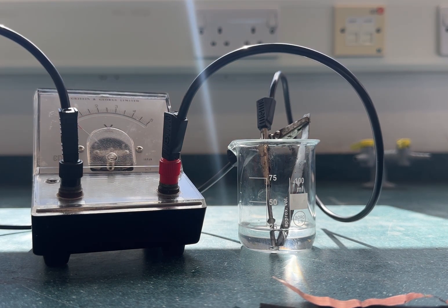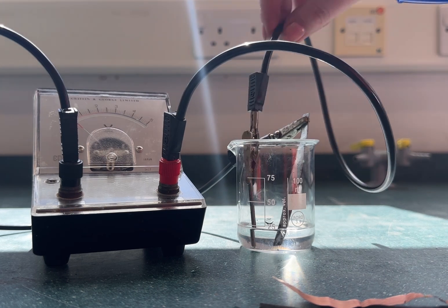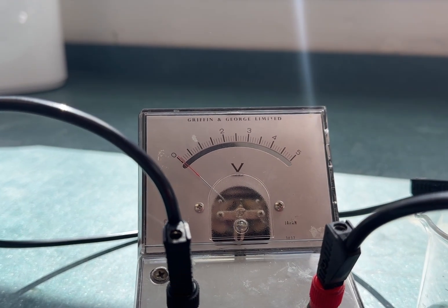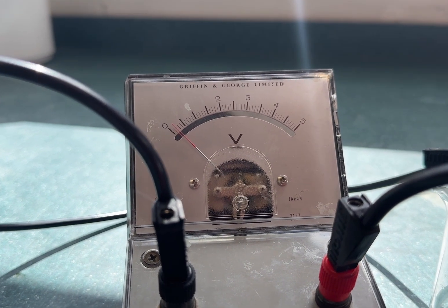Once both electrodes are connected and placed into the electrolyte it's important to make sure they're not touching. We can then have a look at the voltage that is produced. In this case it's just under half a volt.